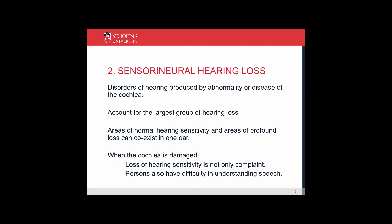Sensorineural hearing losses are disorders of hearing produced by abnormality or disease of the cochlea. They account for the largest group of hearing loss. Areas of normal hearing sensitivity and areas of profound hearing loss can coexist in one ear. When the cochlea is damaged, a loss of hearing sensitivity is not the only complaint — persons also have difficulty understanding speech.